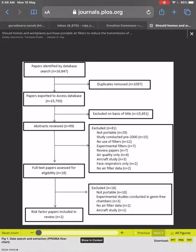So then, this is how they did: papers identified by database, they started with 16,847 papers, out of which 1,097 duplicates were removed. So that leaves them with 15,750 papers, which were then excluded based on the title. A lot of them were excluded because even though the search keywords gave them papers, they were excluded based on the title because they did not meet the standard.